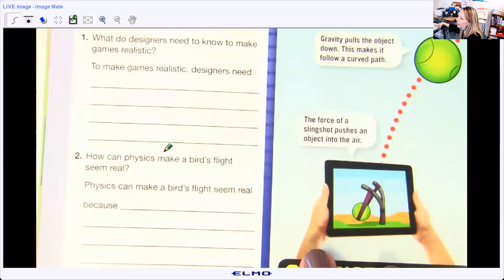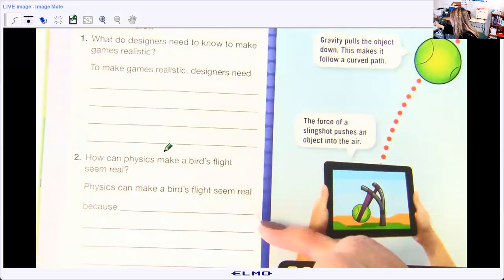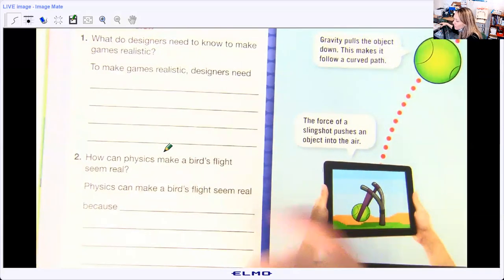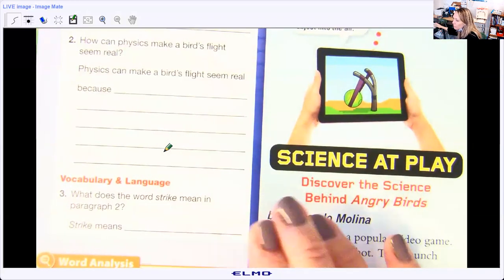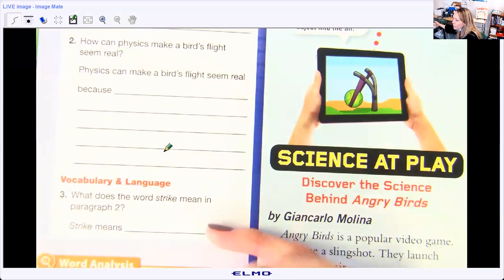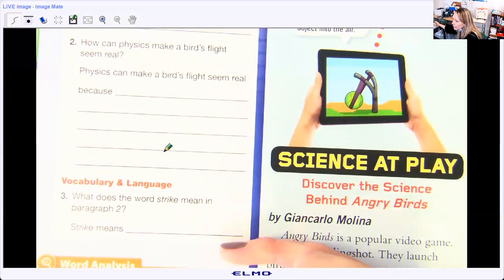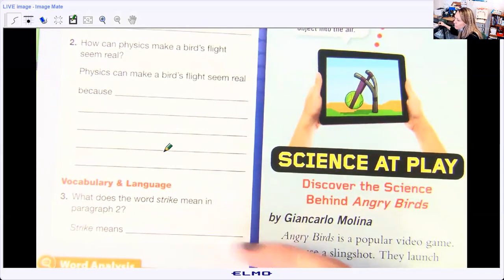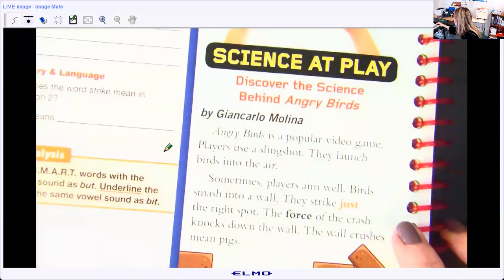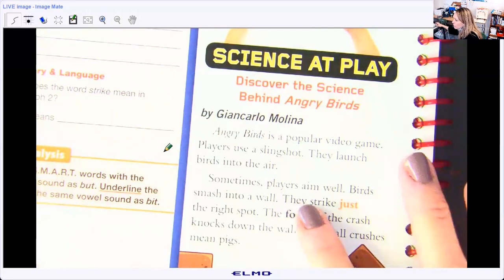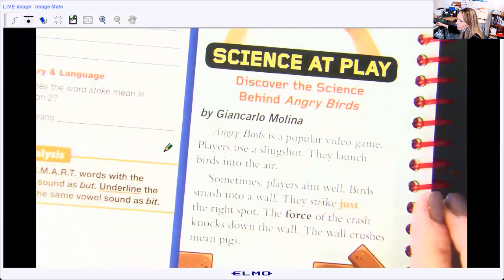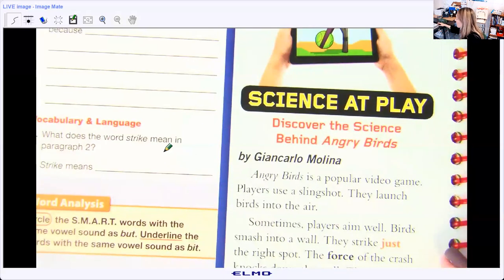Number two, how can physics make a bird's flight seem real? There's your sentence frame to get you started. Three is vocabulary and language. So in paragraph two, you have the word strike. So strike means, and of course, strike was right down here. So make sure you use how they have it. They strike just the right spot.